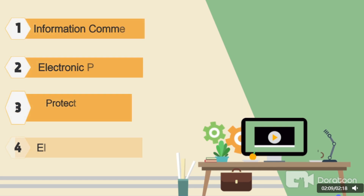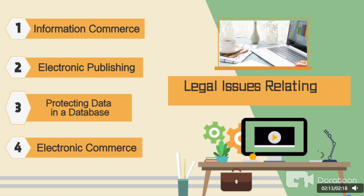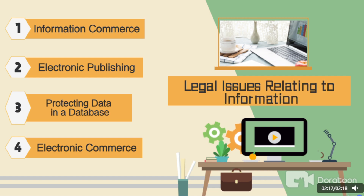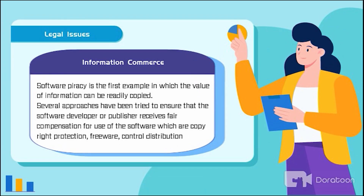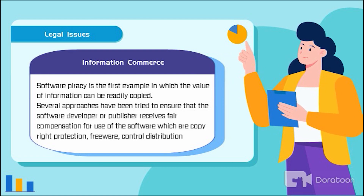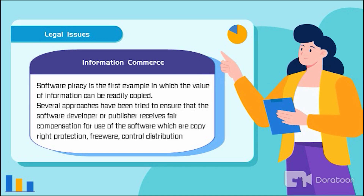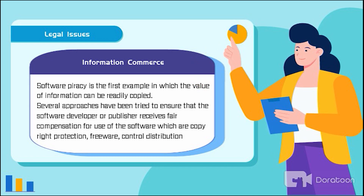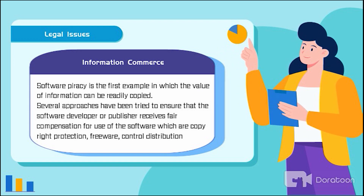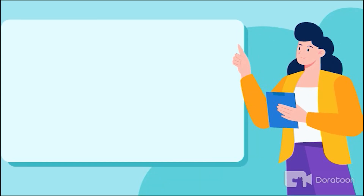Legal issues relating to information include information commerce, electronic publishing, protecting data in a database, and electronic commerce. Software piracy is the first example in which the value of information can be readily copied. Several approaches have been tried to ensure that the software developer or publisher receives fair compensation for use of the software, which include copyright protection, freeware, and controlled distribution.